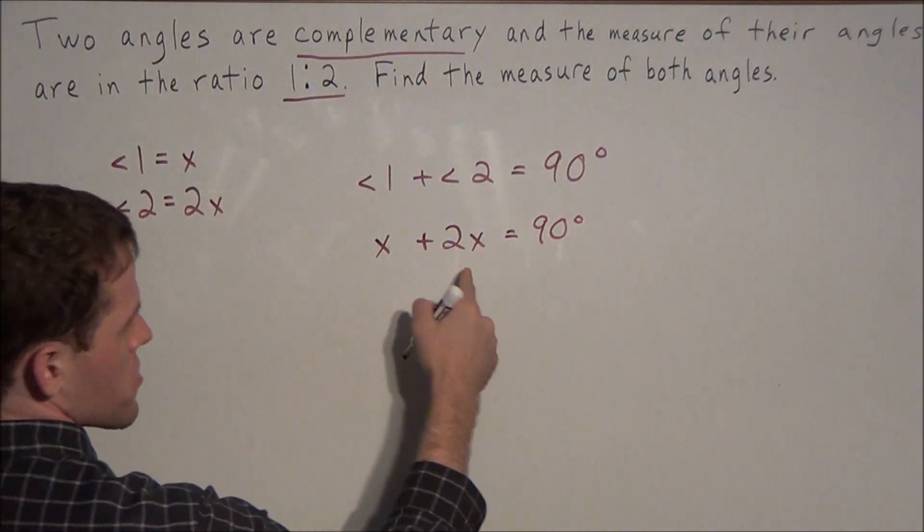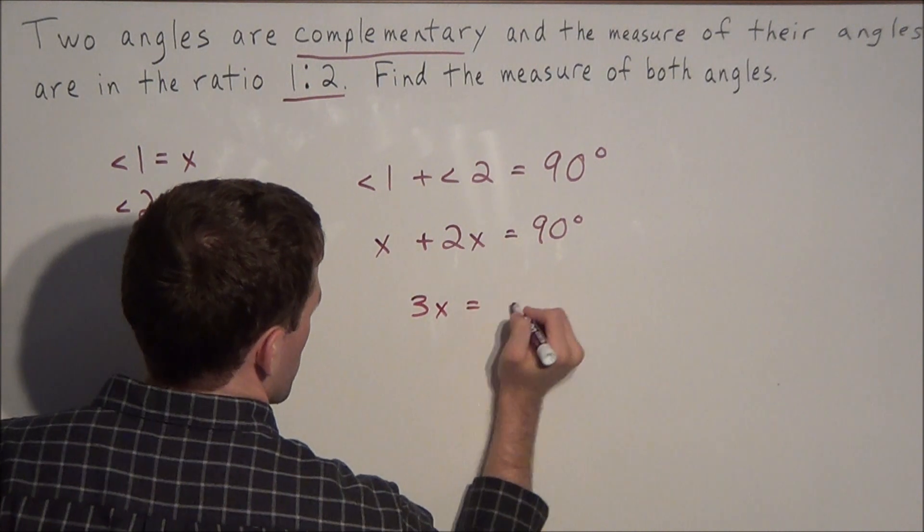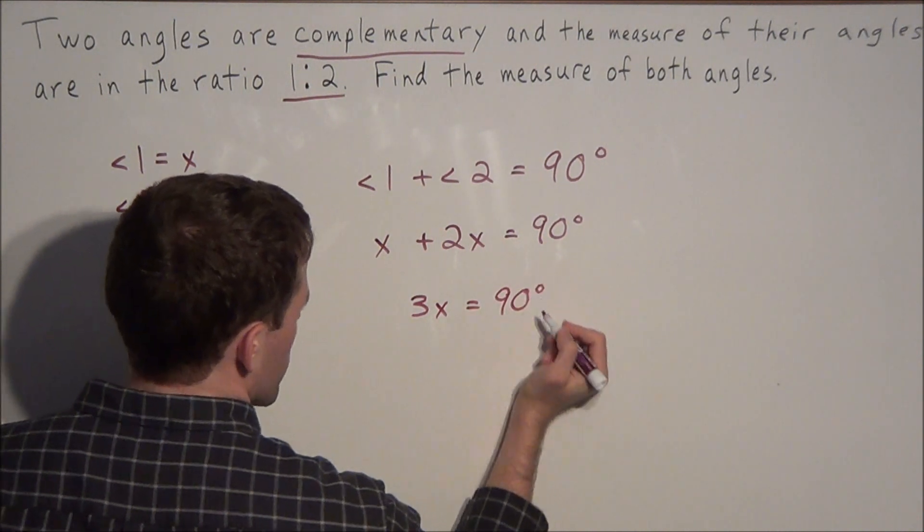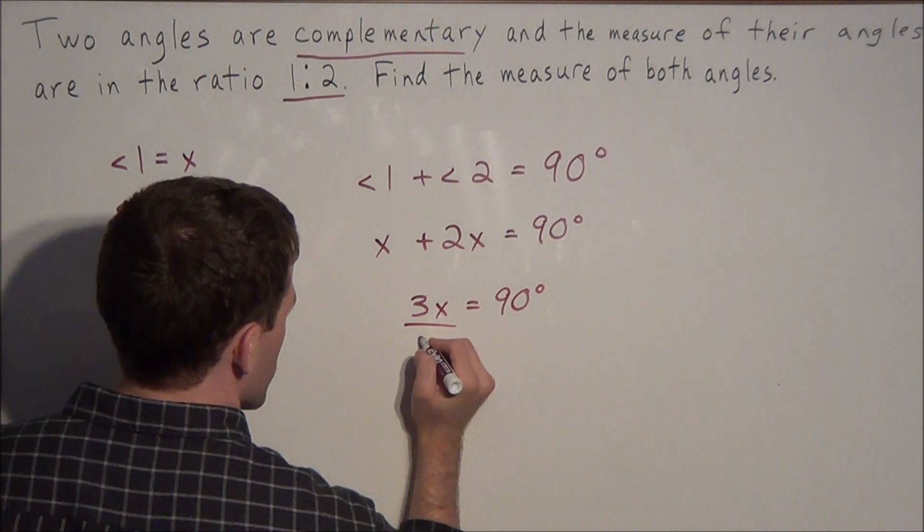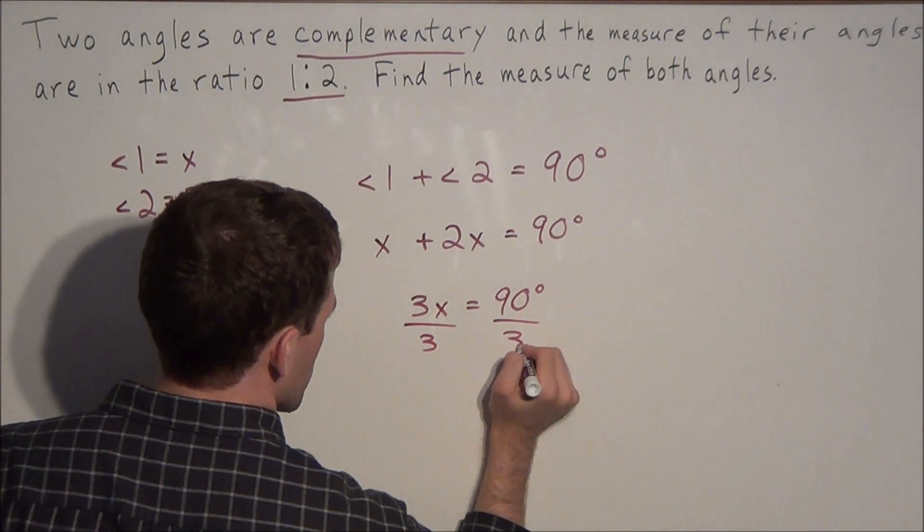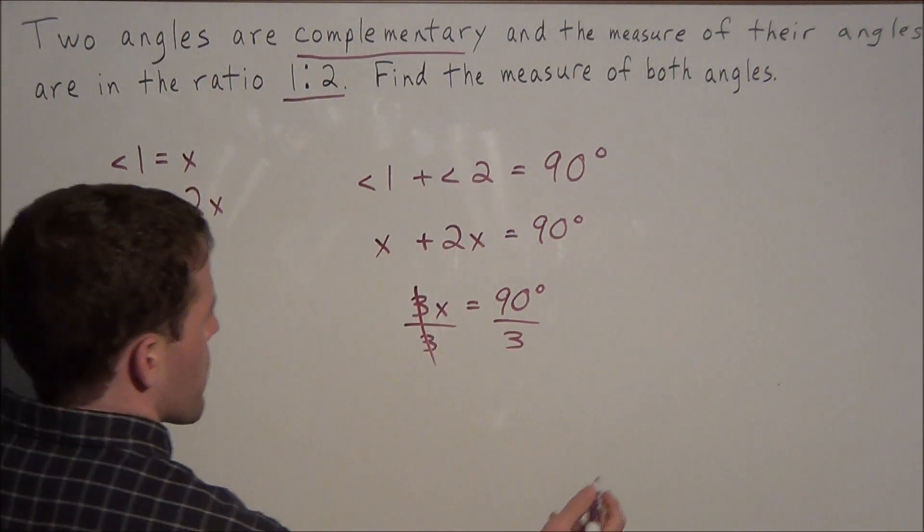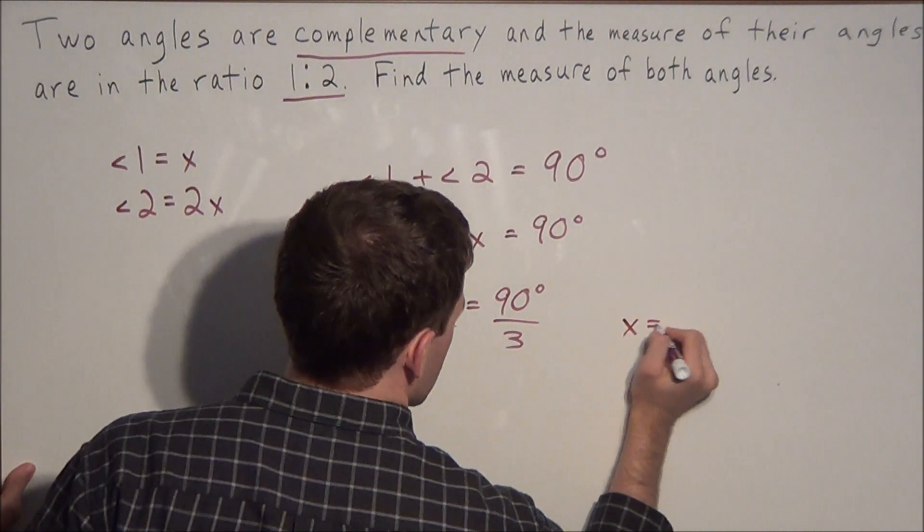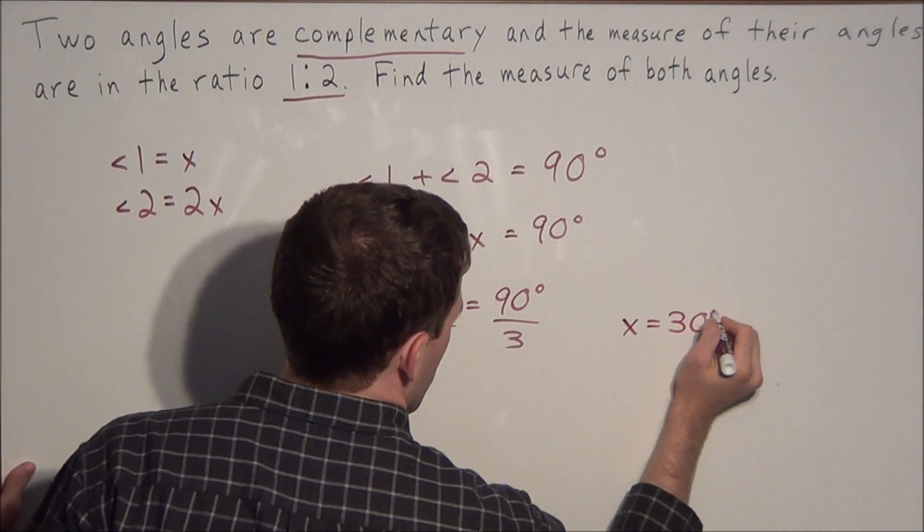Now 1x plus 2x is 3x, so we have 3x equals 90 degrees. And now finally to solve for x, we divide both sides by 3. Three divided by 3 cancels, and we have x equals 30 degrees.